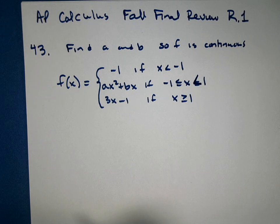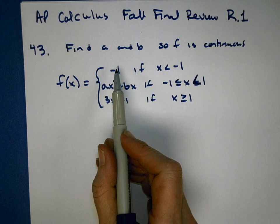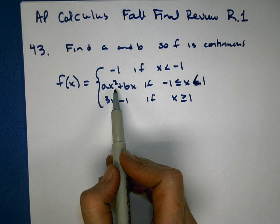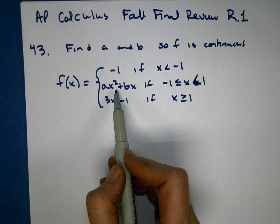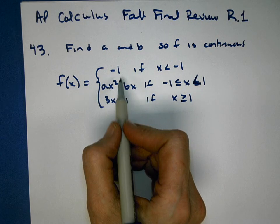If a function is continuous, it shouldn't have any breaks in it. It should all connect, and so we have three separate pieces in this piecewise function, and we want this, wherever this one stops, we want this one to start at that same Y value. And so what we'll need to do is set these two equal to each other.